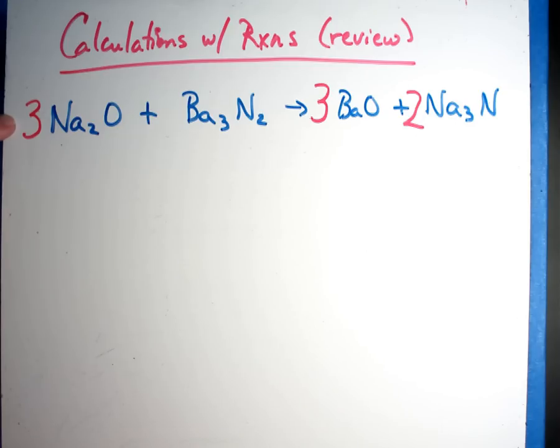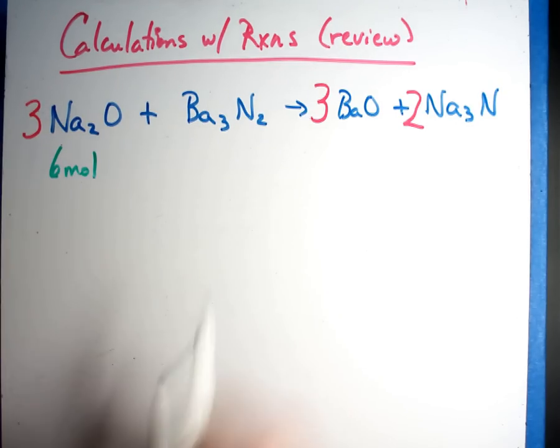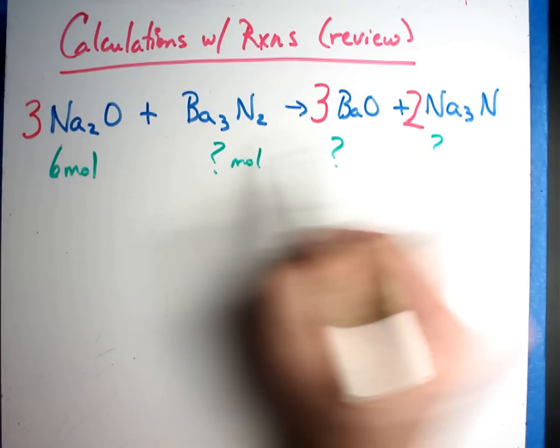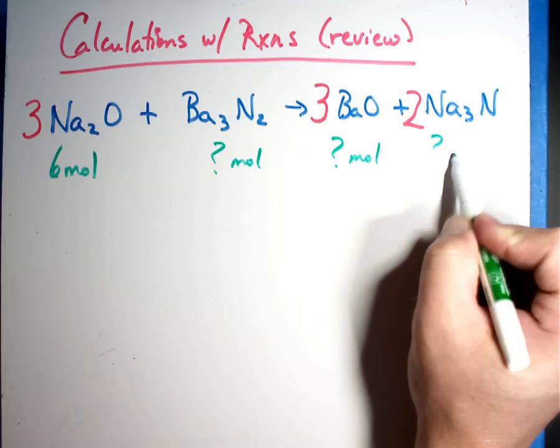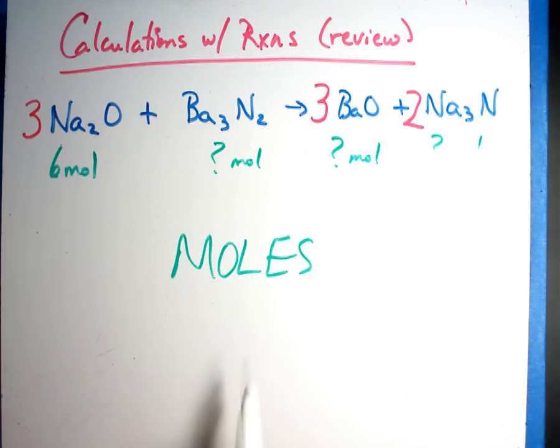Here's an example of a reaction. Let's say that I had six moles of this. I can calculate all of these answers in moles. Again, this is review. We've learned this before because it's all about moles. If I can keep things in moles, then I can calculate anything I need.